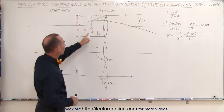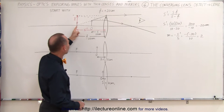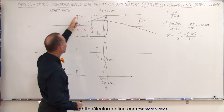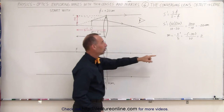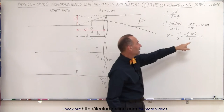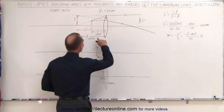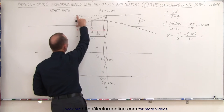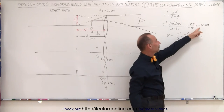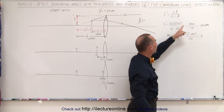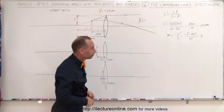Just like before, when we place the object right at the halfway point between the lens and the focal point, the image will form right at the focal point. Notice that the magnification will be twice the object size — the image will be twice the object size. The fact that we have a negative 20 centimeters for the image distance means that the image is virtual.